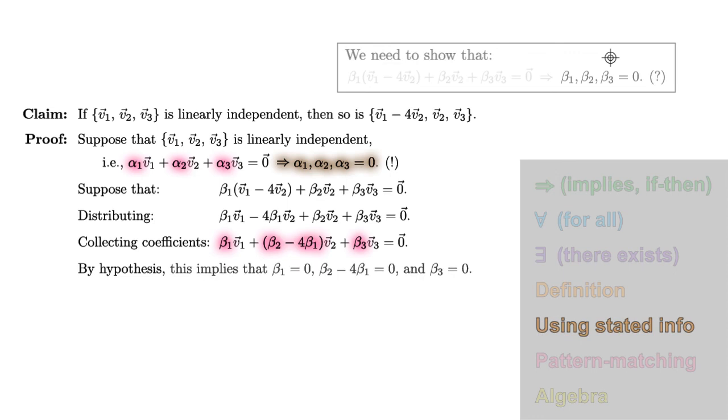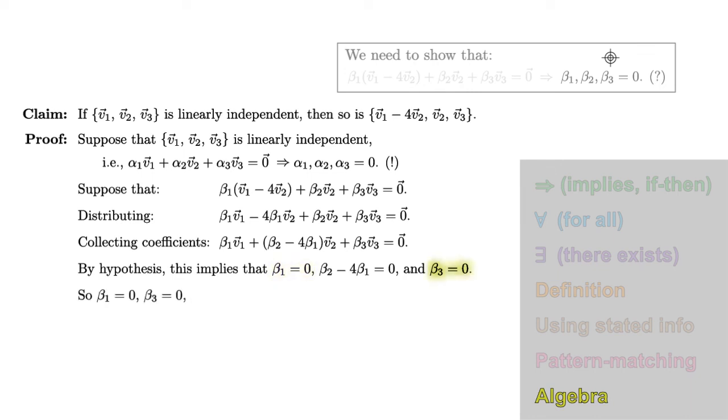By our hypothesis, all three of these coefficients must be 0. We now have a little linear system to solve for our betas. We immediately see that beta 1 equals 0, and beta 3 equals 0. And since beta 2 minus 4 beta 1 equals 0, beta 2 equals 4 beta 1, which is also 0. We've shown that beta 1, beta 2, and beta 3 are all 0, which finishes our proof.